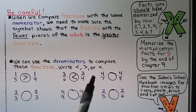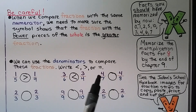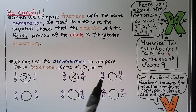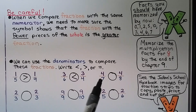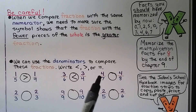We have four-sevenths and four-eighths. We have the same numerator. Seven is the lower denominator, so four-sevenths is the larger fraction — it was cut into fewer pieces. Four-sevenths is greater than four-eighths.